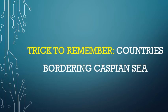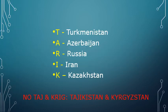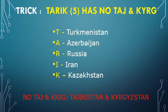Caspian Sea's location is one of the most important topics from the prelims exam point of view. You can remember the trick: Tariq has no Taj and Creek. Or just remember the word TARIQ, as it has 5 letters. The Caspian Sea is bordered by 5 major countries: T for Turkmenistan, A for Azerbaijan, R for Russia, I for Iran, and K for Kazakhstan.